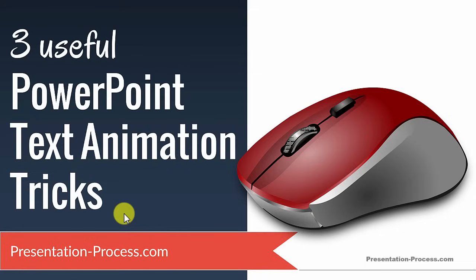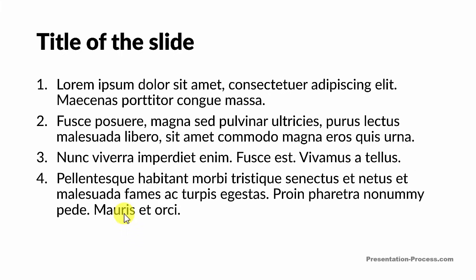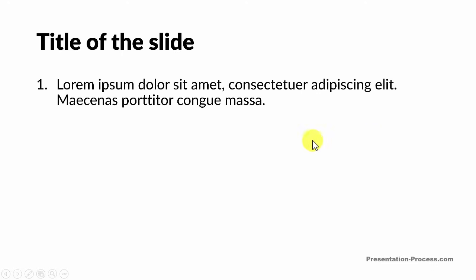The way we will go about learning this is: first we will learn the basic text animation. The way it works is, first the audience would be able to see just the title of the slide. You give a short explanation of the title. Then on the first click, you will have the first point appear.